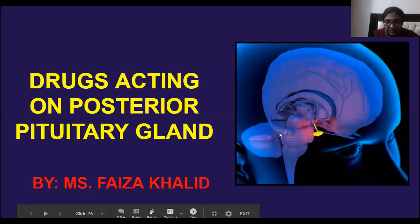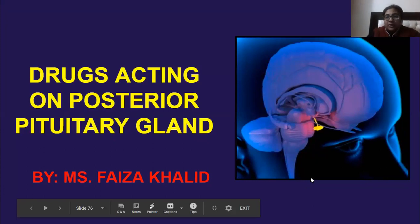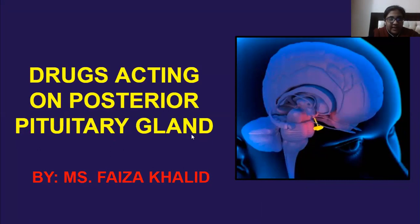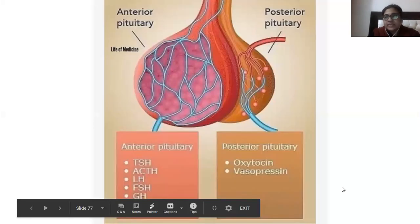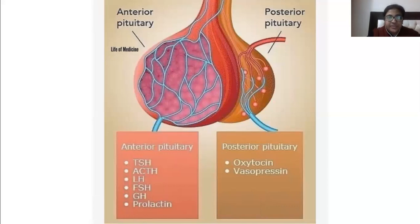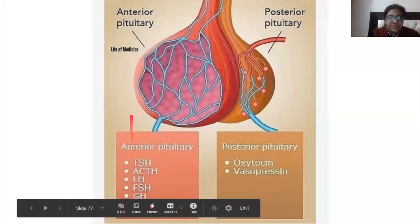Today we are going to talk about drugs that will act on the posterior pituitary gland and also the hormones released from it. We already talked about the anterior pituitary gland and the hormones it releases. Now we will talk about the posterior pituitary gland and the hormones it produces: oxytocin and vasopressin.